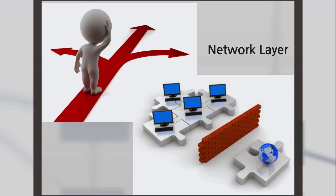The network layer identifies the best routes for the data to travel more efficiently, because the main responsibility of this layer is to make the data travel from the origin to the destination. Routers and firewalls work in this layer.